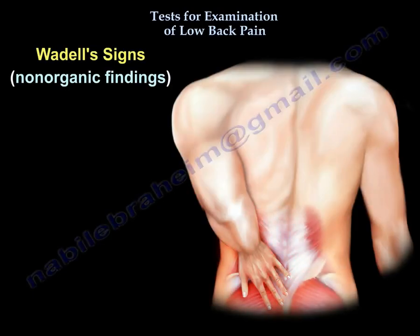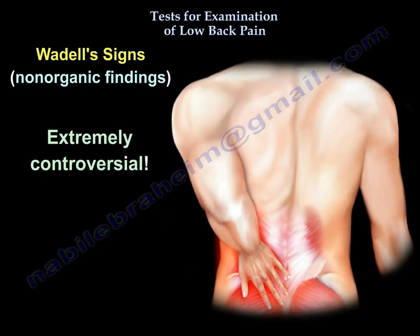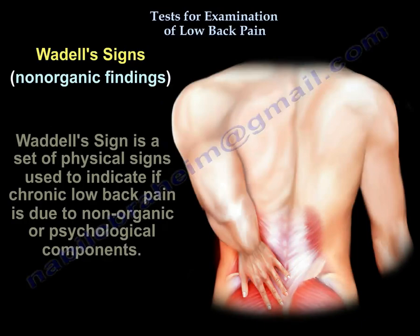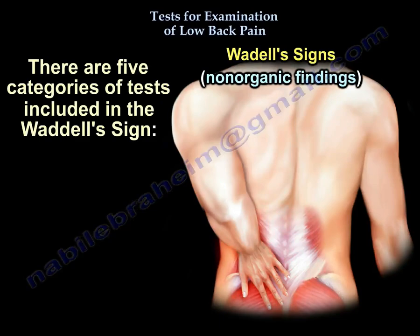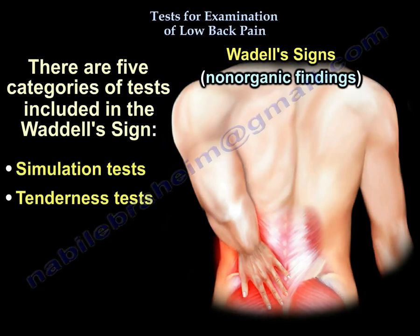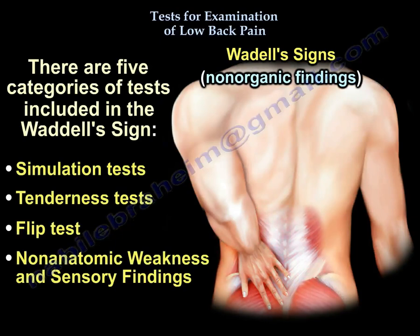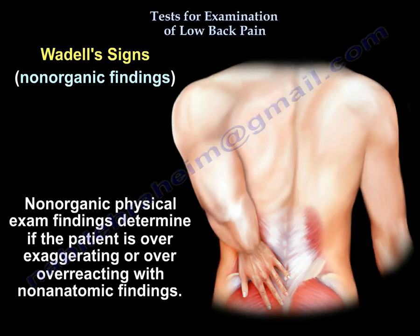Waddell signs are non-organic findings — an extremely controversial set of physical signs used to indicate if chronic low back pain is due to non-organic or psychological components. There are five categories: simulation test, tenderness test, flip test, non-anatomic weakness and sensory findings, and overreaction. Non-organic physical exam findings help determine if the patient is over-exaggerating or overreacting with non-anatomic findings.